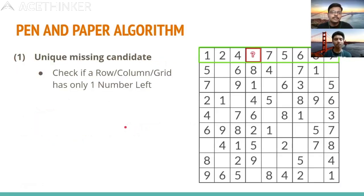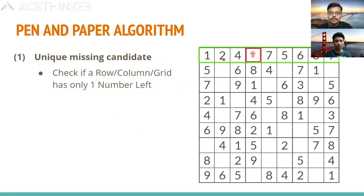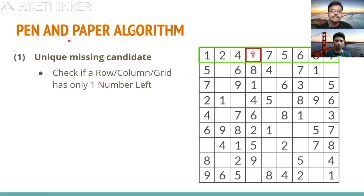Let's talk about the pen-and-paper algorithm. The first step is the unique missing candidate — checking if a row, column, or grid has only one number missing. For example, if a row has eight of nine elements filled, the empty cell can only have one possible value. If 3 is missing from the whole row, then that cell must be 3.